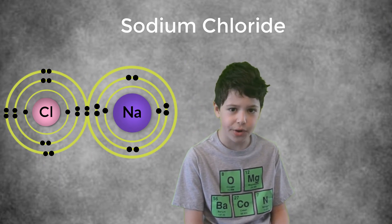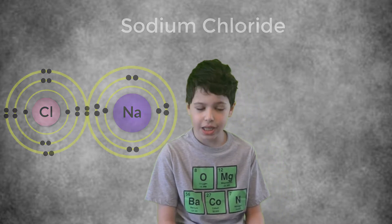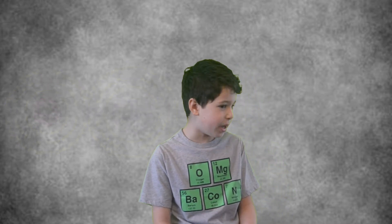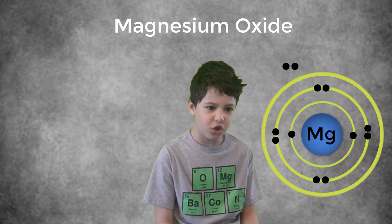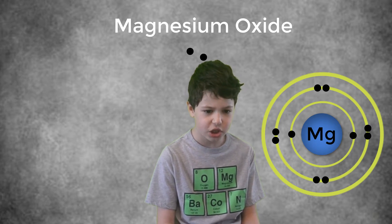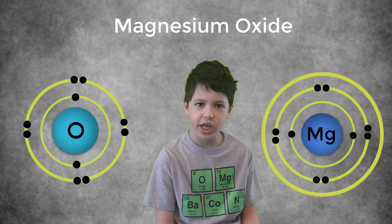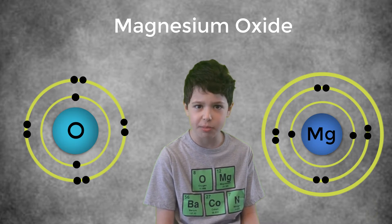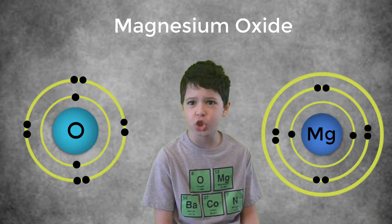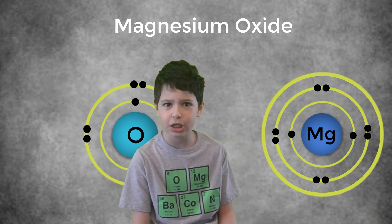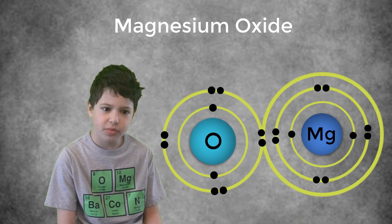The resulting compound is sodium chloride. Now let's go through magnesium oxide. Magnesium transfers its two valence electrons to oxygen to form an oxide ion and a magnesium ion. These two ions are oppositely charged and will be electrostatically attracted by an ionic bond.